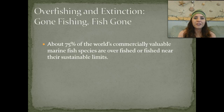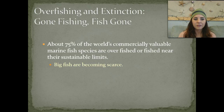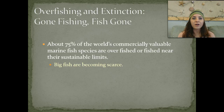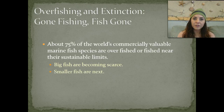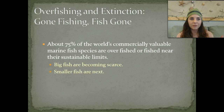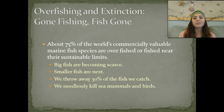About 75% of the world's commercially valuable marine fish species are overfished or fished near their sustainable limits. Big fish are becoming very scarce—the fish size in Jamaica used to be much larger, but now all the fish are smaller because those are the only ones left to catch and sell. Now we're overfishing our small fish too. We actually throw away about 30% of the fish that we catch, and we needlessly kill sea mammals, marine birds, and sea turtles as bycatch.